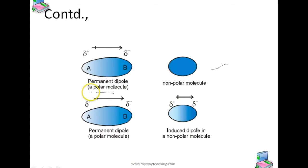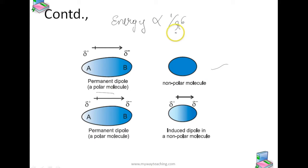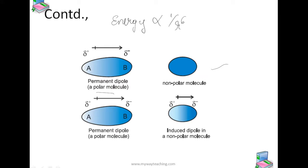In this case also, the interaction energy is proportional to 1/r⁶, where r is the distance between the two molecules. The induced dipole moment depends upon the dipole moment present in the permanent dipole and the polarizability of the electrically neutral molecule. Molecules of larger size can be easily polarized, and higher polarizability increases the strength of attractive interactions.